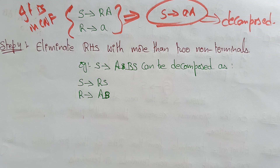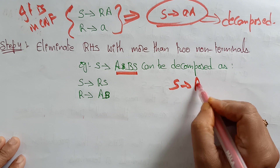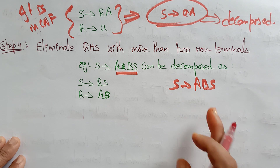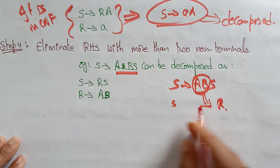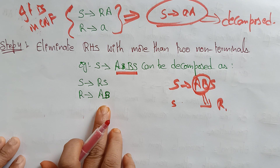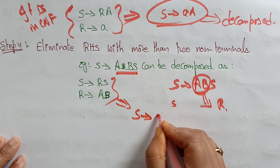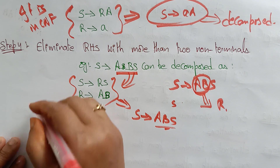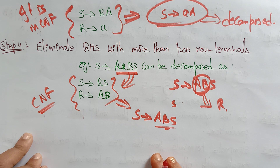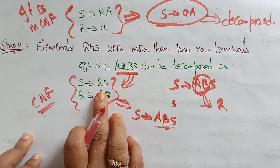Next, eliminate right-hand sides with more than two non-terminals. Suppose S → ABS, which has three non-terminals. Since CNF requires at most two, decompose it: replace S → ABS with S → RS and R → AB. If you substitute R back with AB, you get the original production. So this single production is decomposed into two productions, both of which are in Chomsky normal form. Any right-hand side with more than two non-terminals can be decomposed this way.